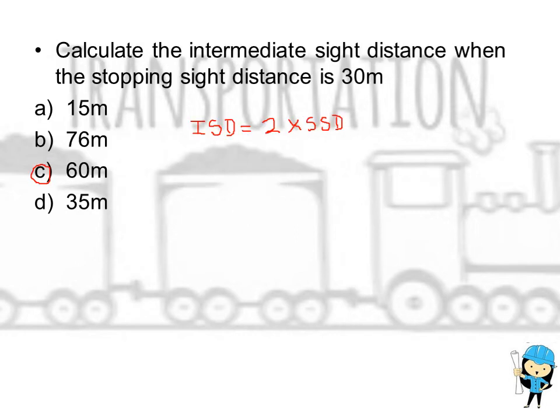Calculate the intermediate sight distance when the stopping sight distance is 30 meter. We have a simple formula: intermediate sight distance is equal to twice the stopping sight distance. Therefore the intermediate sight distance is 60 meter.